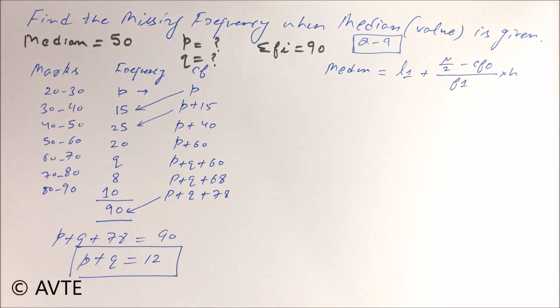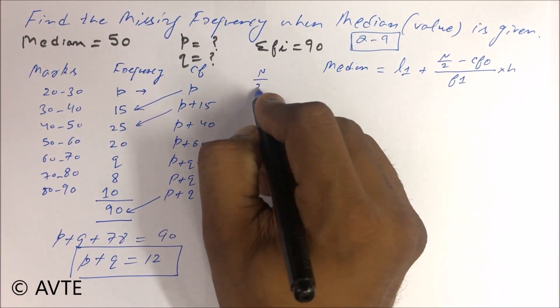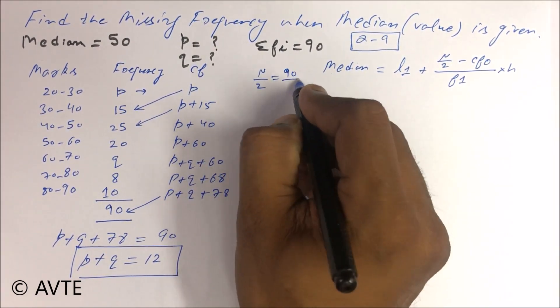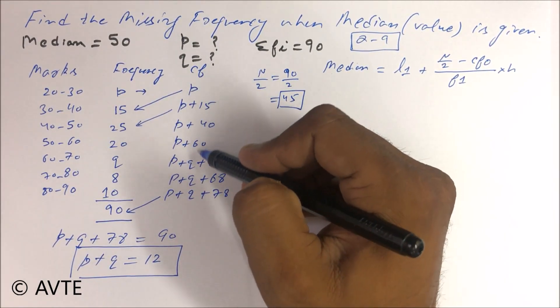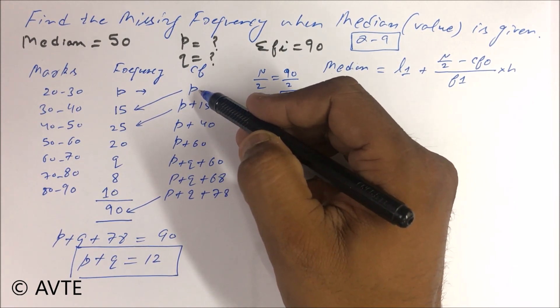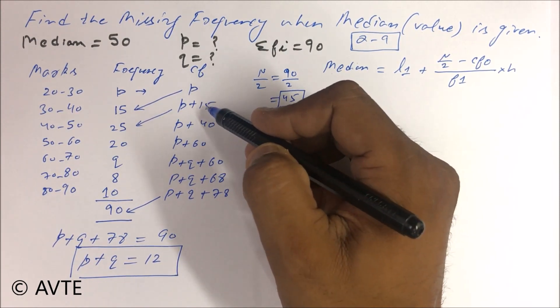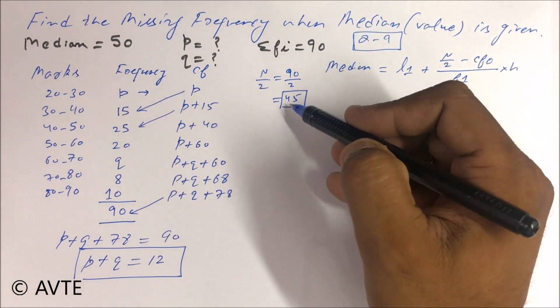Then we need to check where our median lies. For that we have to check N by 2, that is 90 by 2, that is 45. To check 45 it is very difficult because we don't know the value of P. If the value of P is 30, the median lies here. If the value of P is 5 then median lies here, so it is very difficult.